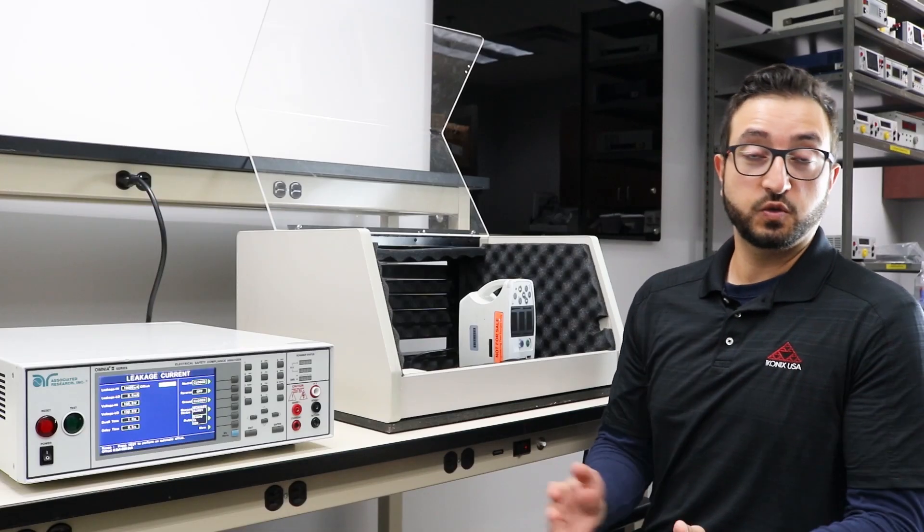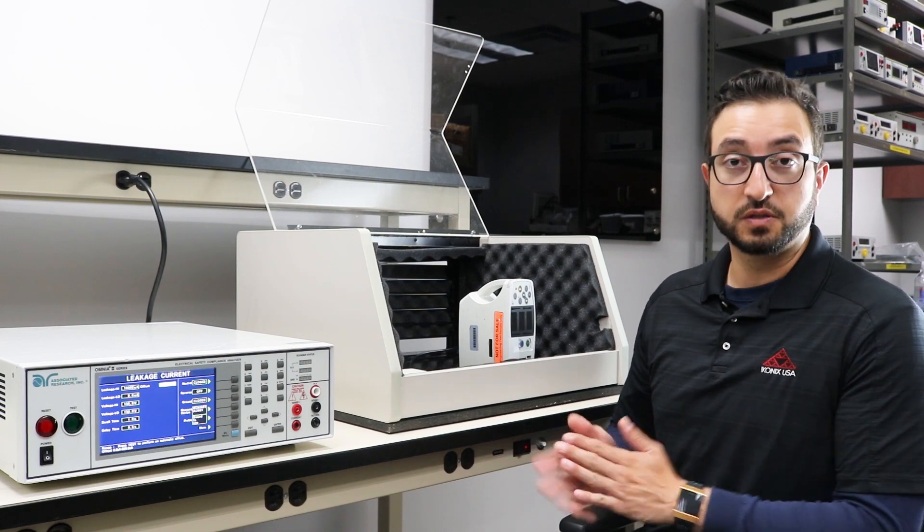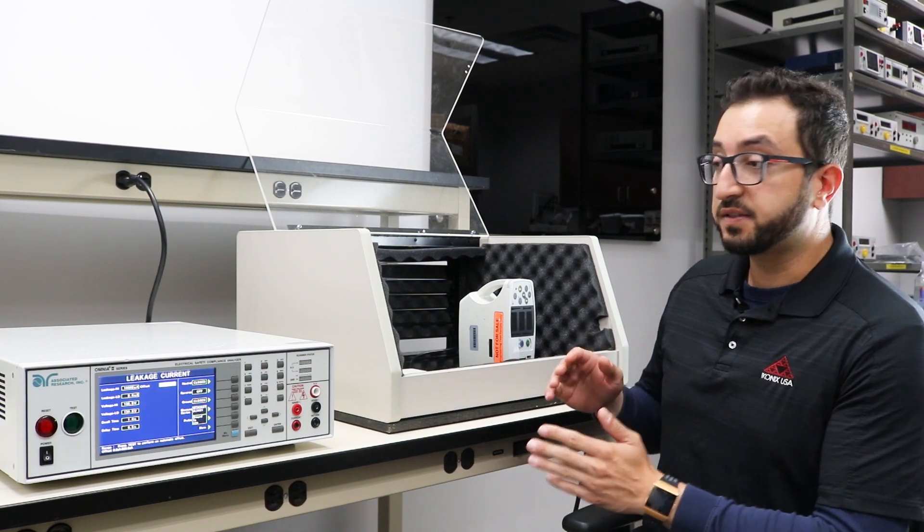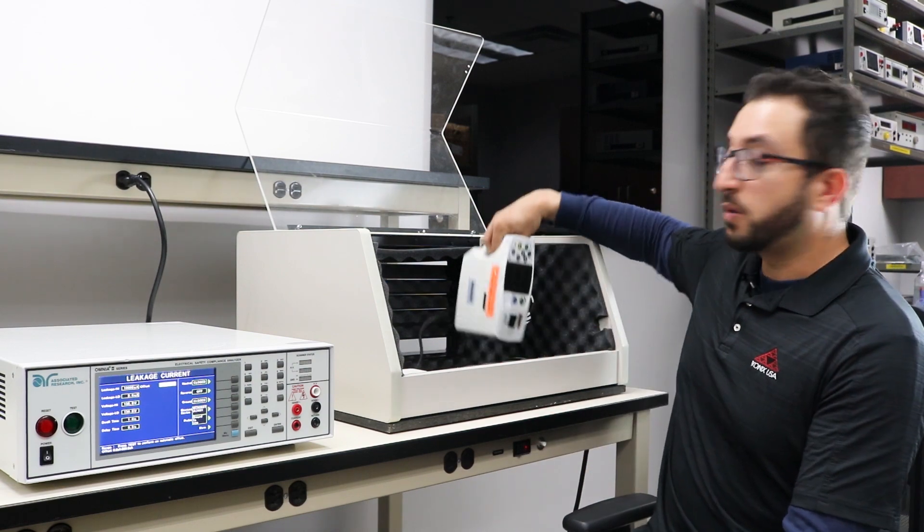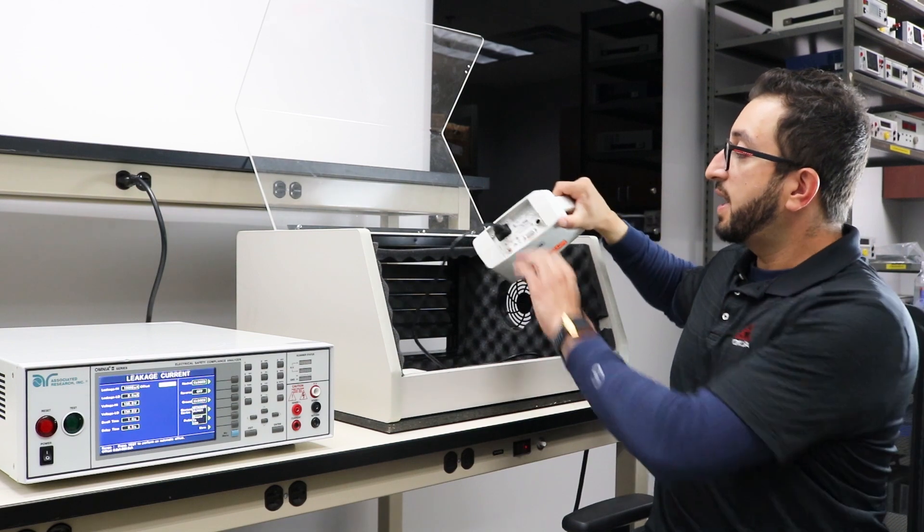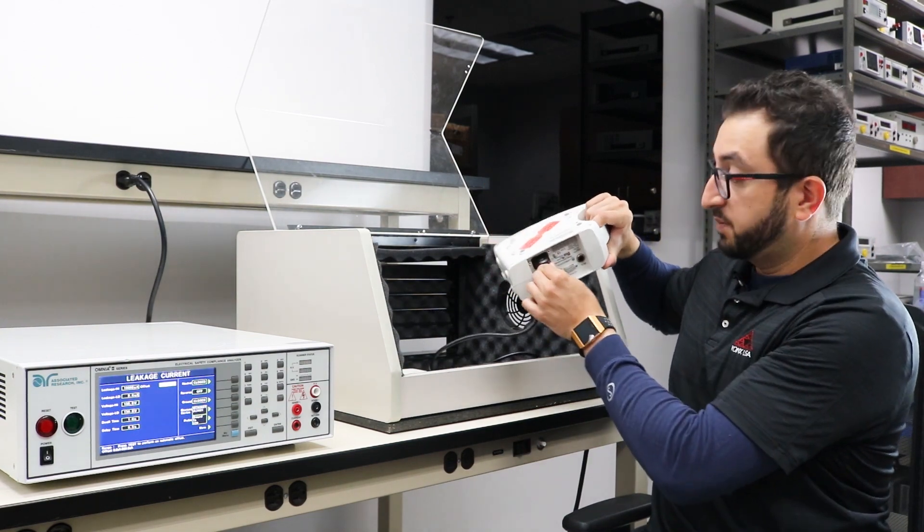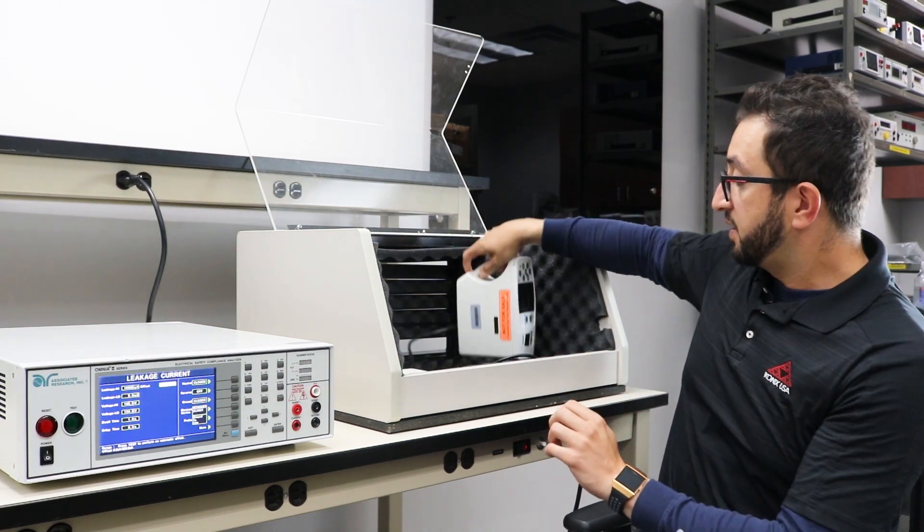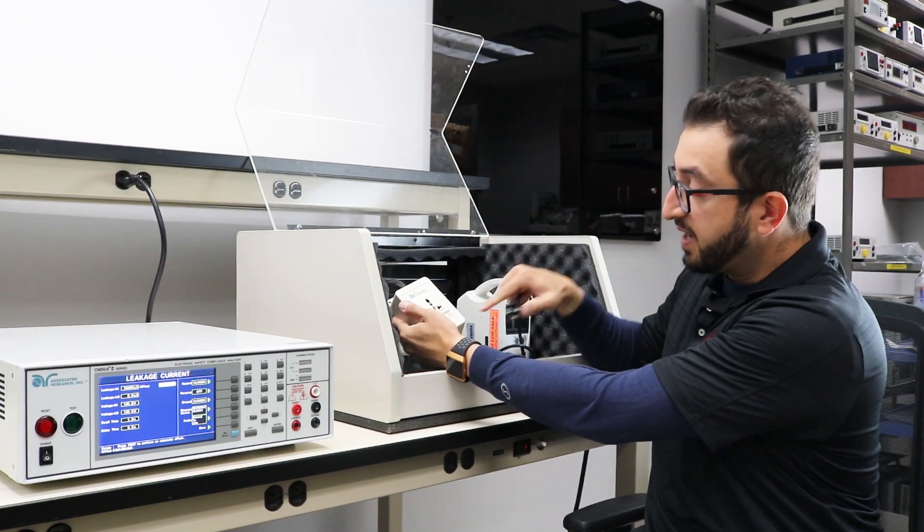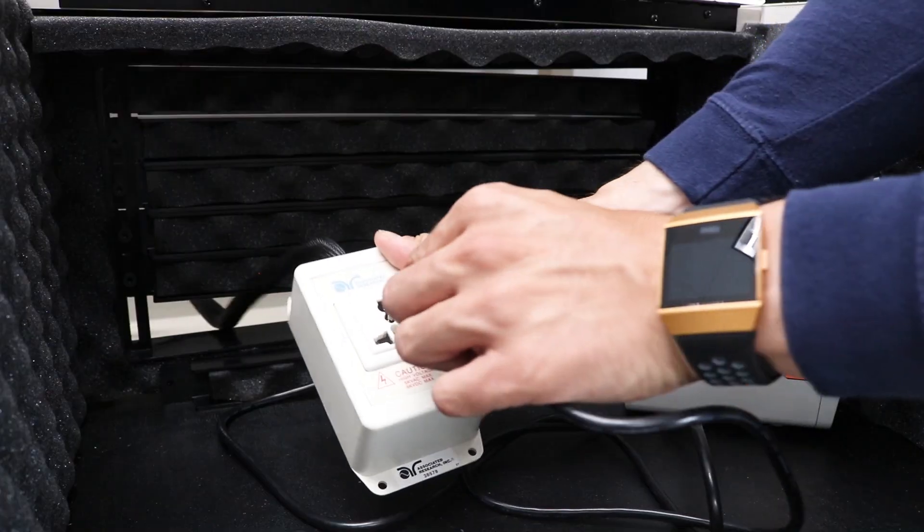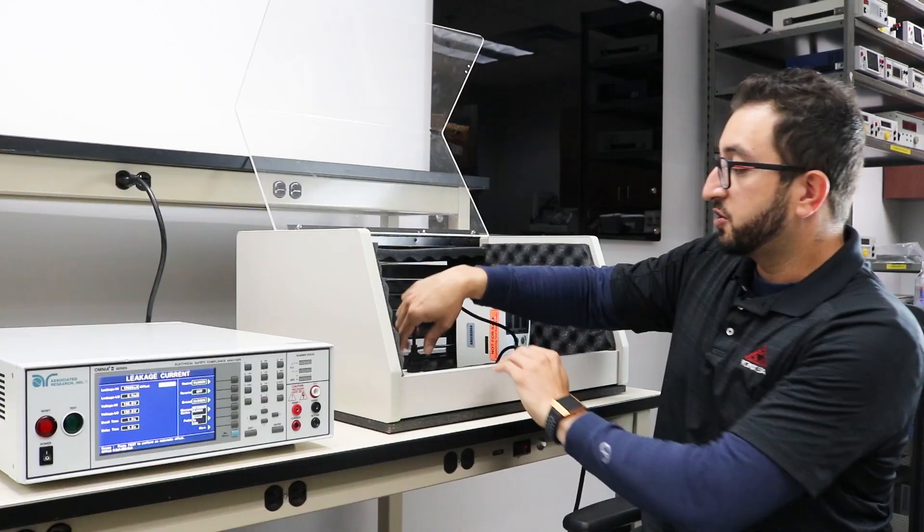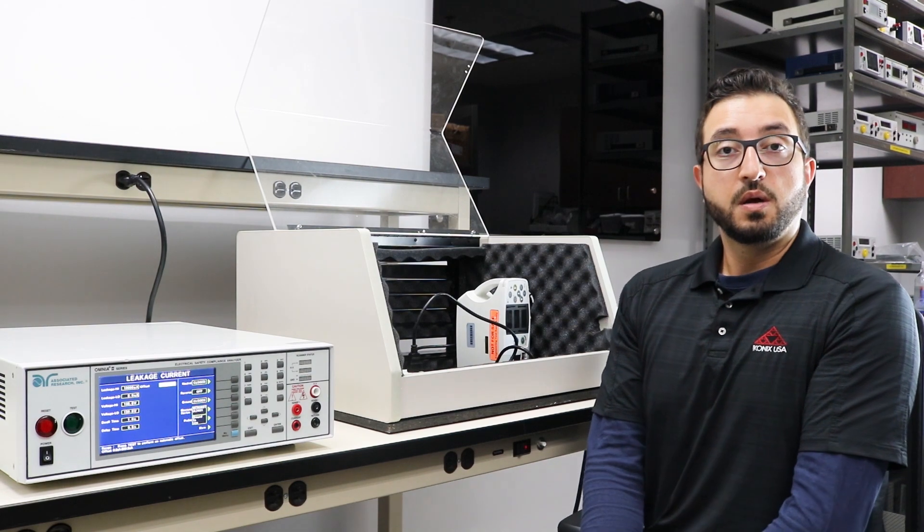Now we're ready to make the necessary test connections for performing an earth leakage test on our device under test, which in this case is a small medical device, a Class 1 medical device. I have the line cord of this device plugged into the back side of the device, and the other end of the line cord will be plugged into the adapter box of our electrical safety analyzer. With these connections we are now ready to perform the test.